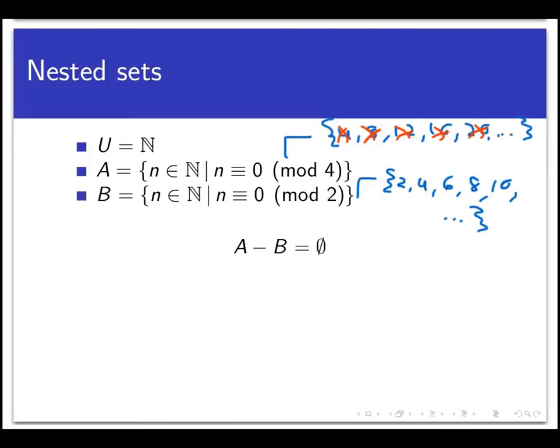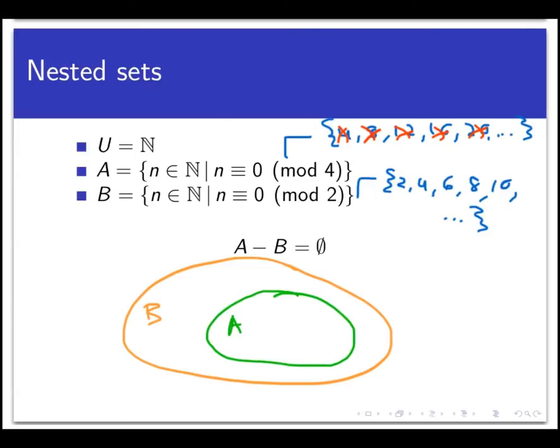In a slightly different way of understanding this, let's draw some diagrams here called Venn diagrams. We're going to make a giant circle that consists of the set B. B is the set of all even natural numbers. A if you're going to draw it would actually be a piece of B, about half of B. The 0 mod 4 stuff is contained within or nested inside the 0 mod 2 stuff.